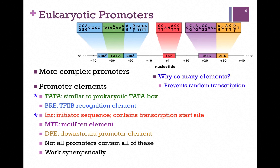Let's compare the bacterial system to eukaryotic promoters. Here we have a figure from your book at the top of the screen. As you can see, there are much more complex promoters, and the RNA polymerases that recognize them are also more complex, as we might expect. So there are multiple promoter elements.